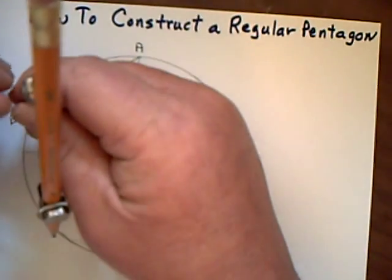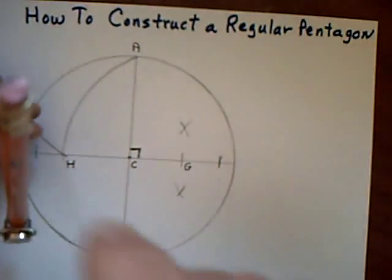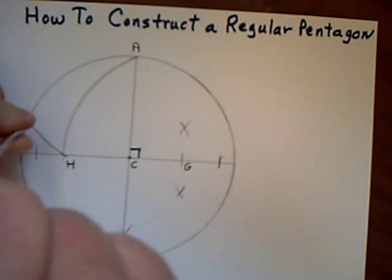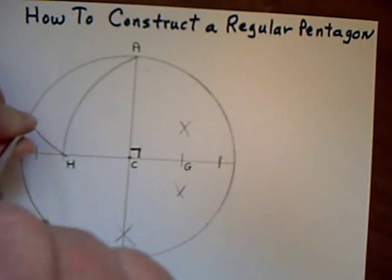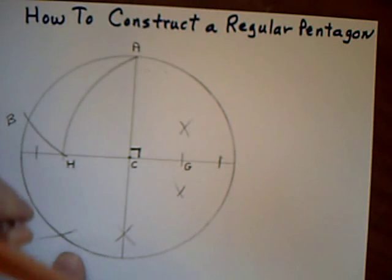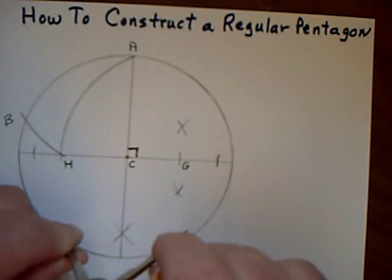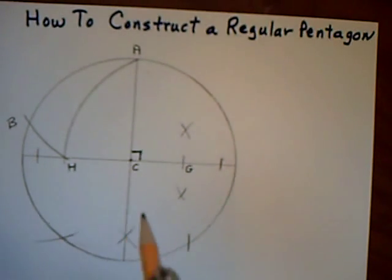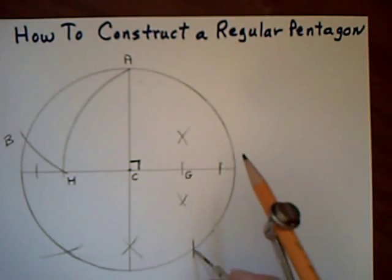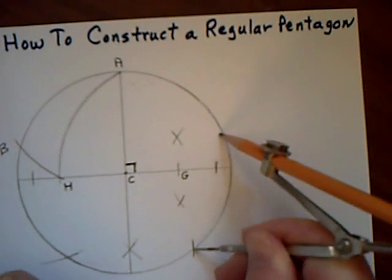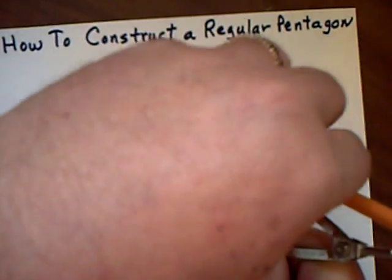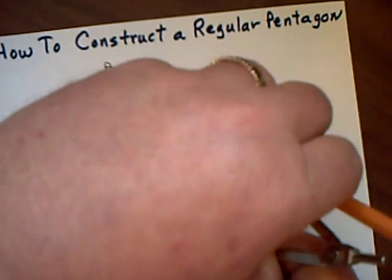So I go to point B, and I make an arc down here at a point I'll call D. And then I go to D, and I make an arc over here at a point I call E. And I go to E, and I make an arc up here at a point I'll call F.